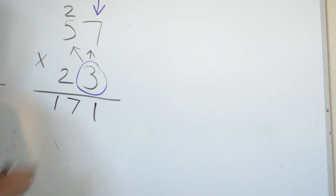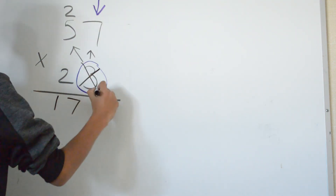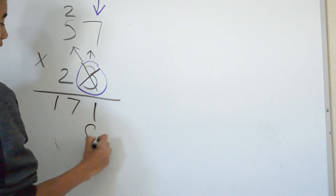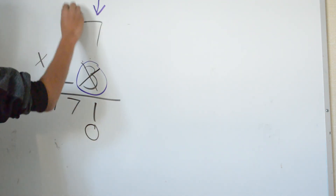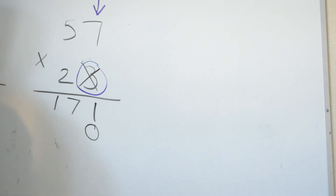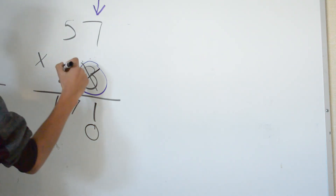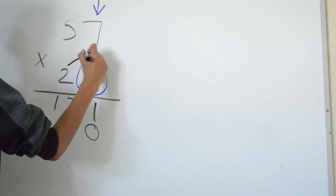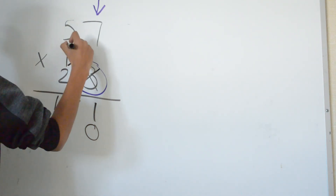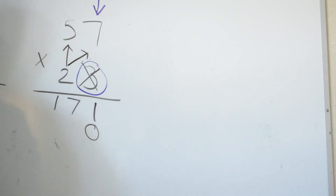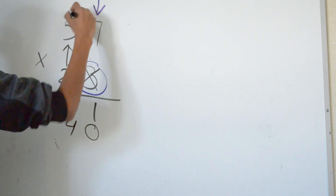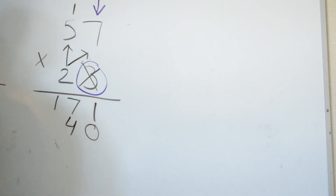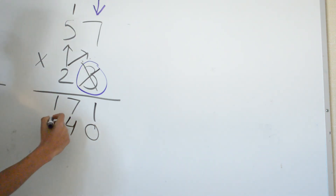Make sure you cross the 3 out and add a 0. Now we multiply 2 times 7 and 2 times 5. 2 times 7 is 14. 2 times 5 is 10 plus 1, it's 11.